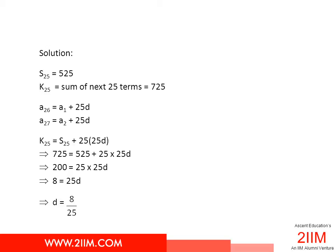In other words, if you add the first 25 terms and get S25, the sum of the next 25 terms will be 25 times 25d plus this S25. Or 200, which is the difference between 725 and 525, equals 25 into 25d. So the common difference is 8 by 25.